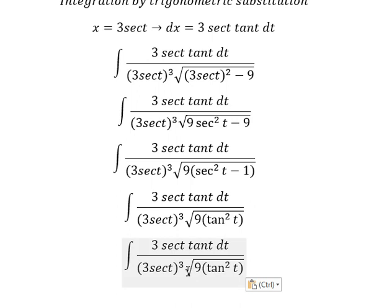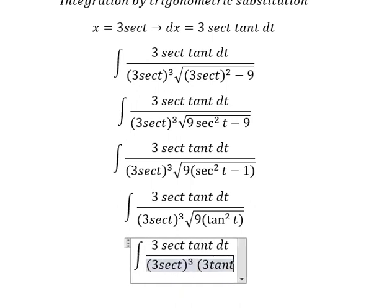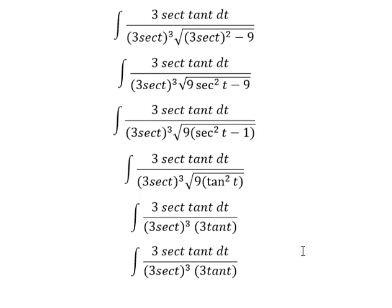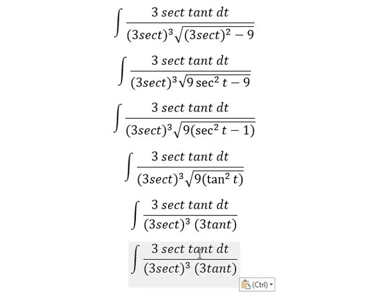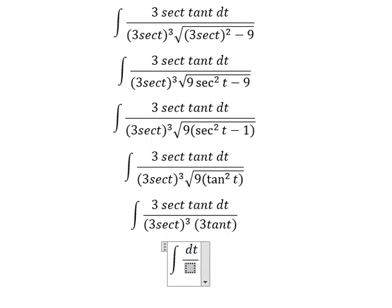This becomes 3 tan t. Next, we simplify: 3 secant t tan t on the numerator and denominator cancels. So we get this simplified form.